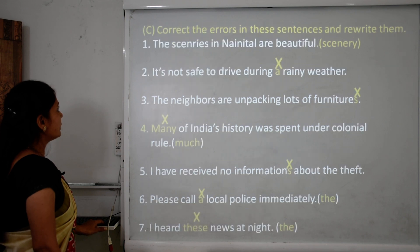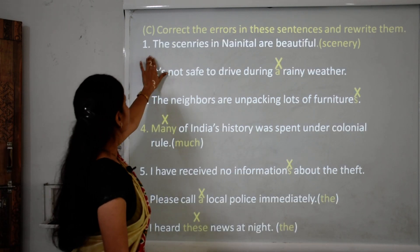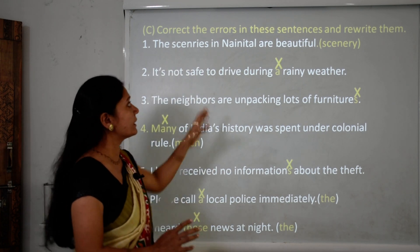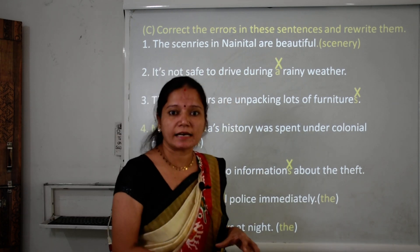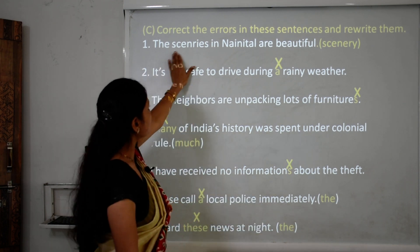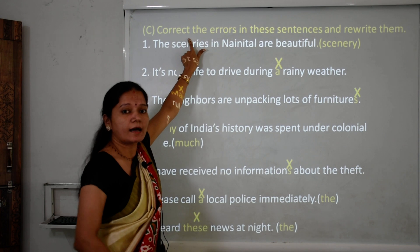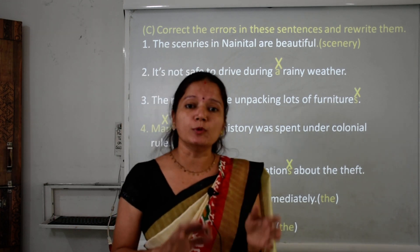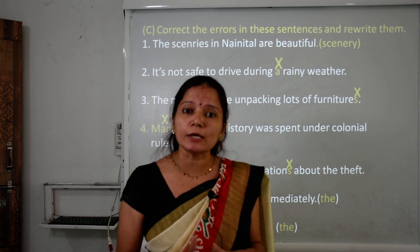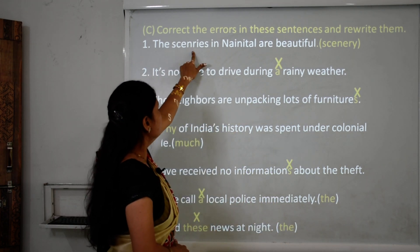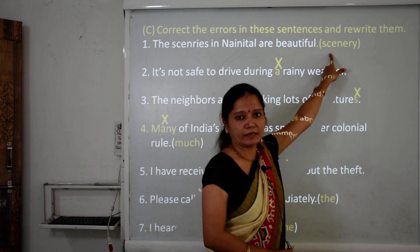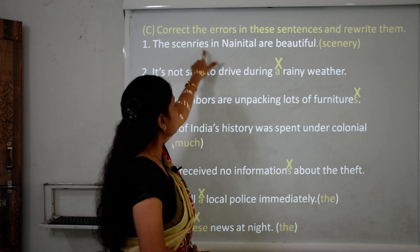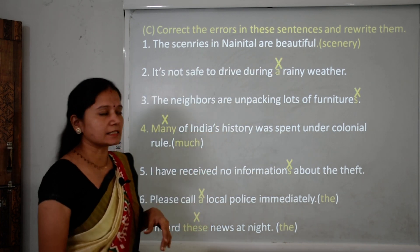Now let's see Exercise C: correct the errors in the sentences and rewrite them. Sentence 1: 'The sceneries in Nainital.' Scenery is an uncountable noun, so it does not have a plural form. The error is 'sceneries' — the correct word is 'scenery.' The corrected sentence is: 'The scenery in Nainital is beautiful.'